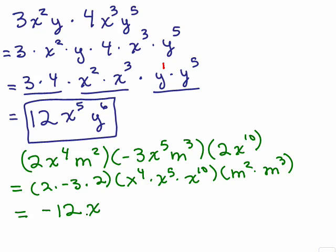The answer is negative 12. So that's the coefficient. The X's. I'm going to add those three exponents together to get 19. And then I write M and add those exponents together to get to the M to the fifth. And there we go. That's your final answer.